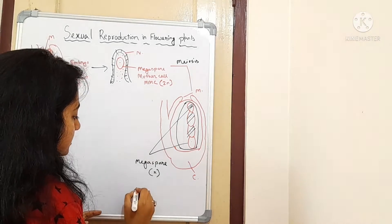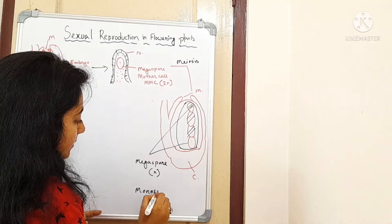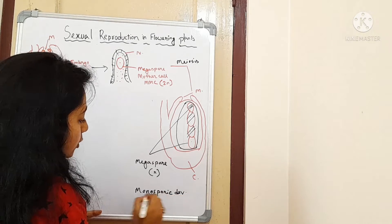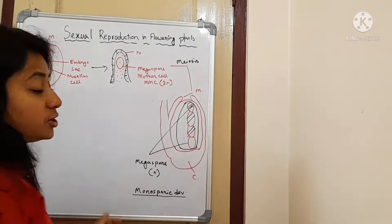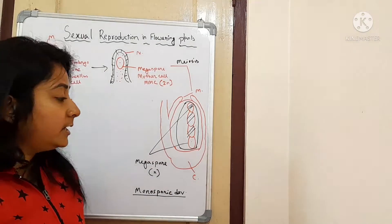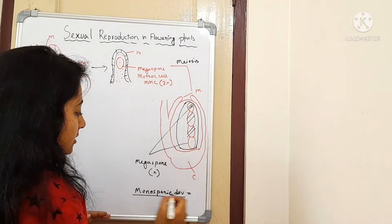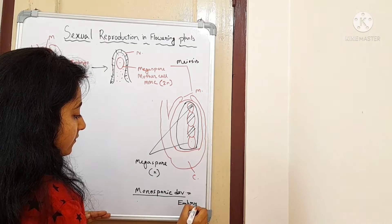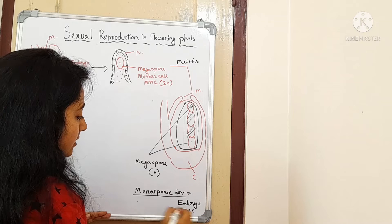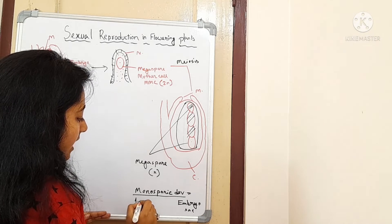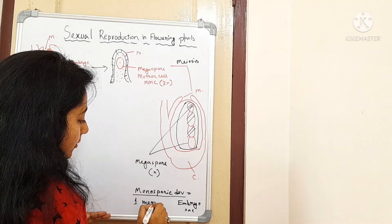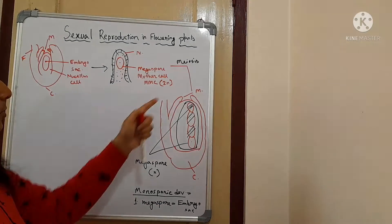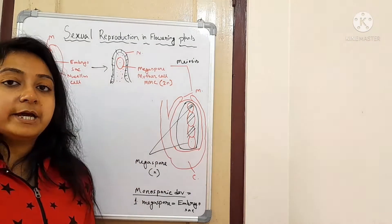Since only one megaspore is used for the formation of the entire embryo sac, this type of development is called monosporic development. This is the topic of monosporic development — the formation of the embryo sac from only one functional megaspore. In this way, out of the four megaspores, only one megaspore will remain functional.